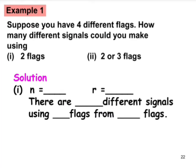Example one: Suppose you have four different flags. How many different signals could you make using two flags, or two or three flags? We have four flags, so n equals 4. For part one, we want to arrange signals using two flags out of four flags, so we calculate 4P2.